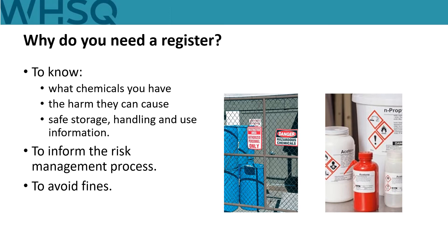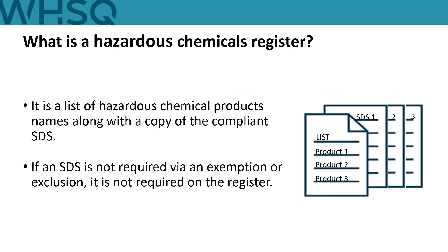If you have hazardous chemicals at your workplace and don't have a register, you can be fined. The register is a list of product names along with a copy of the compliant SDS. The manufacturer or supplier of the hazardous chemical must provide you with an SDS that meets the requirements set out in the SDS code. Under certain circumstances there may be an exemption or exclusion for a hazardous chemical or SDS, in which case the products do not need to be included on the register.